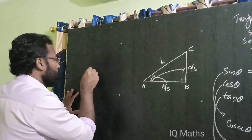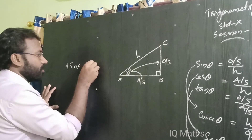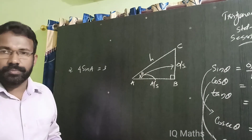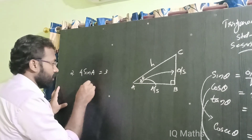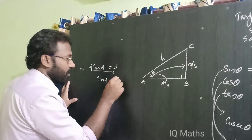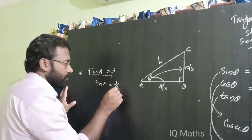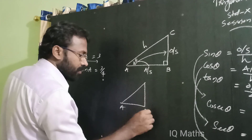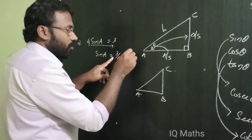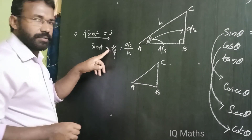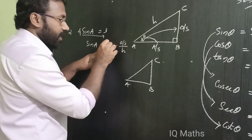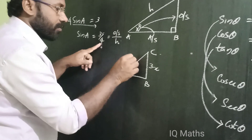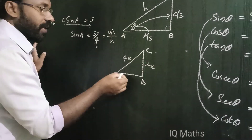The next question: given 4 sin A is equal to 3, find the other trigonometric ratios. We will arrange this as sin A is equal to 3 by 4. Since sin A equals opposite side by hypotenuse, we can take the opposite side as some multiple of 3, so it can be 3k, and the hypotenuse is 4k.